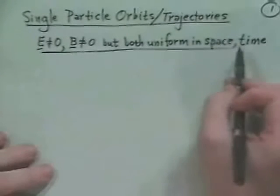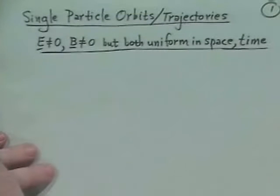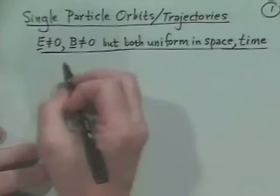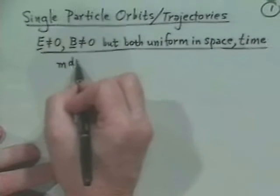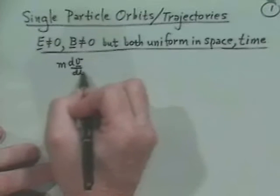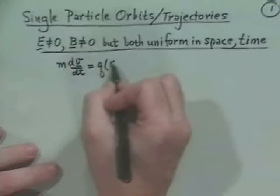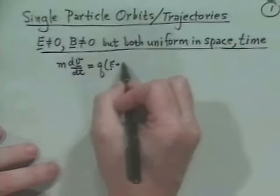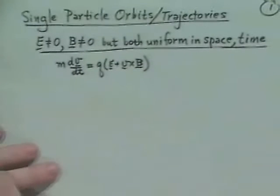What's our general relation for calculating the particle orbits? Of course, it's F equals MA, which we have as mass times acceleration equal to the Lorentz force QE plus V cross B. So that's relatively straightforward.